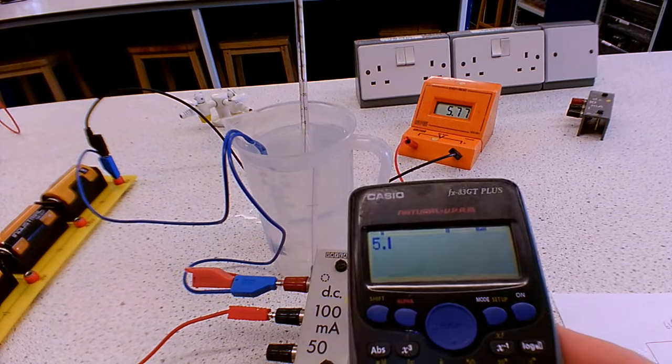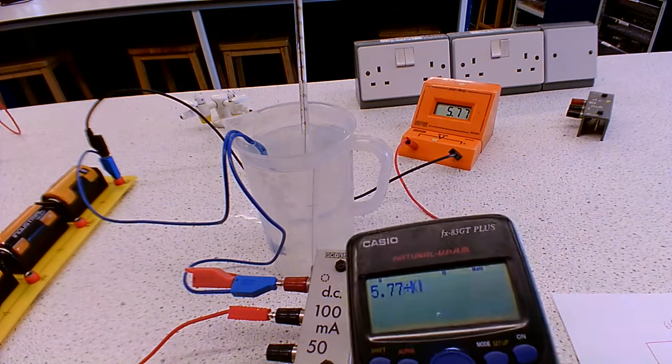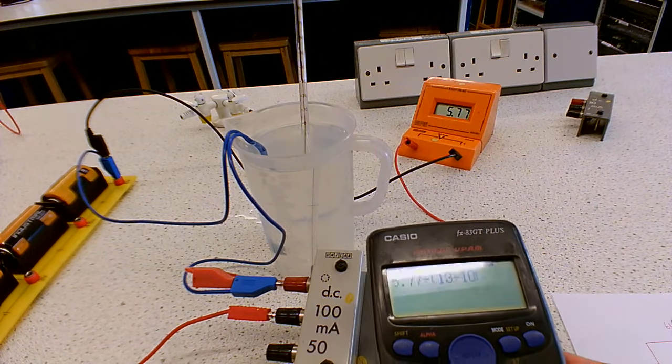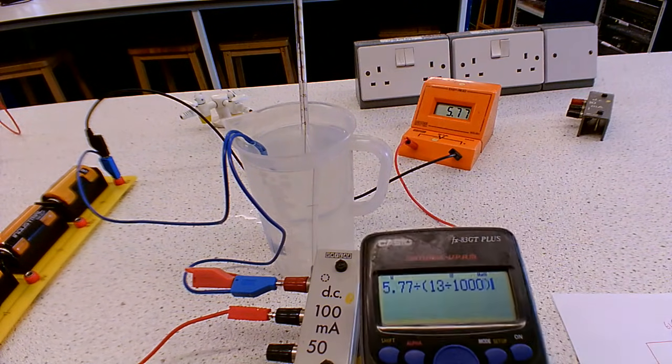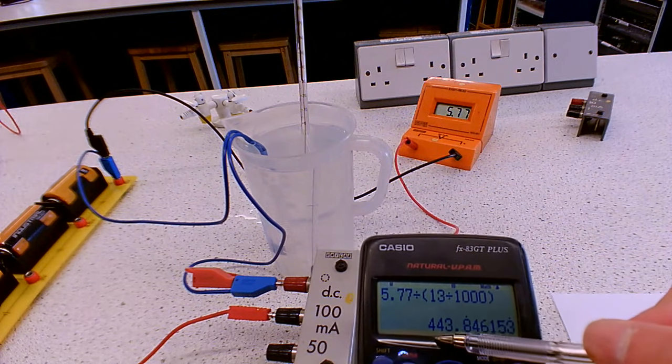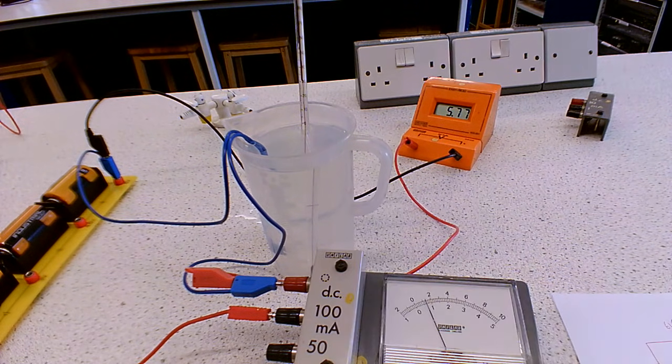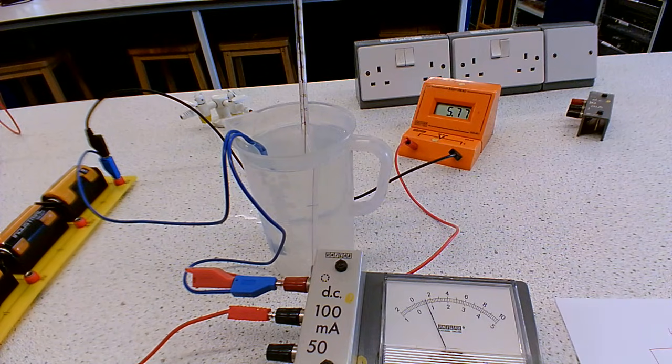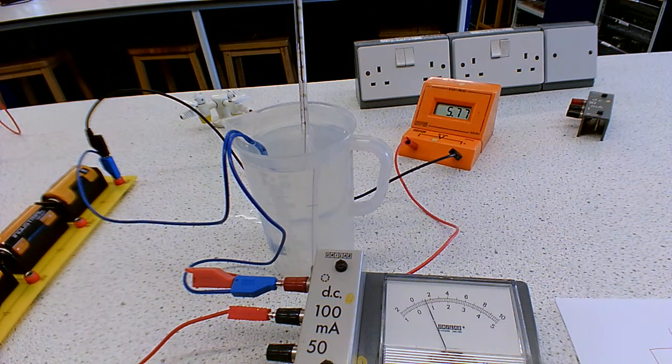So we're going to do 5.77, that's our potential difference, divide it by 13 divided by 1,000. And you can see that is, that will round to 440 if we're giving it two significant figures.